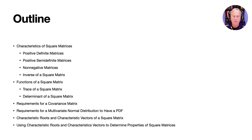Next, we'll specify conditions that a covariance matrix must satisfy. We'll then look at conditions on the covariance matrix that must be satisfied in order for the PDF of a multivariate normal distribution to exist. Next, we'll define characteristic roots and characteristic vectors of a square matrix. And then finally, we'll show how to use characteristic roots and characteristic vectors to determine properties of square matrices.